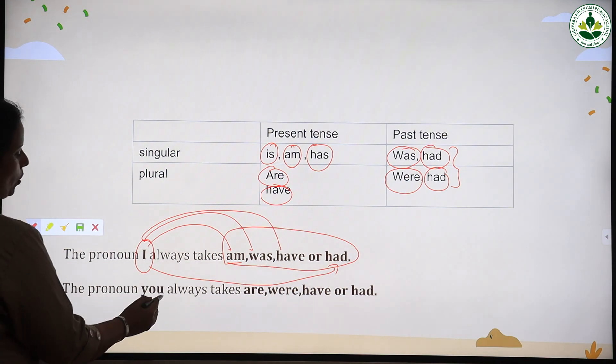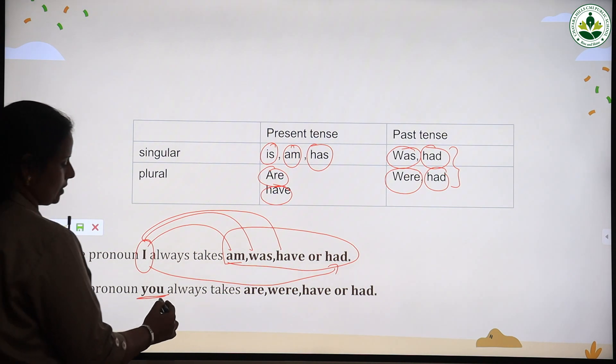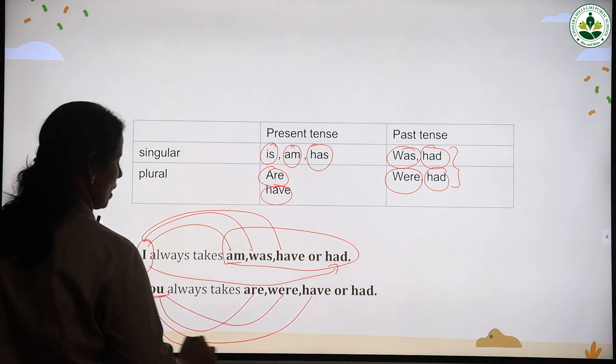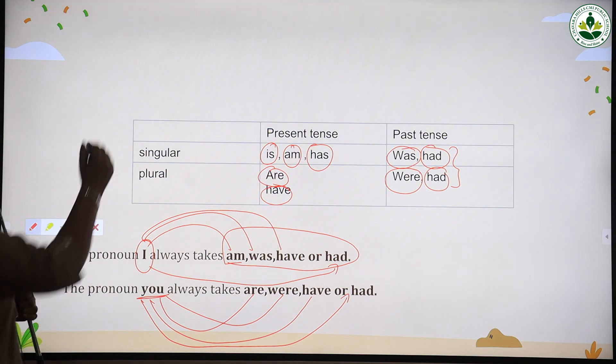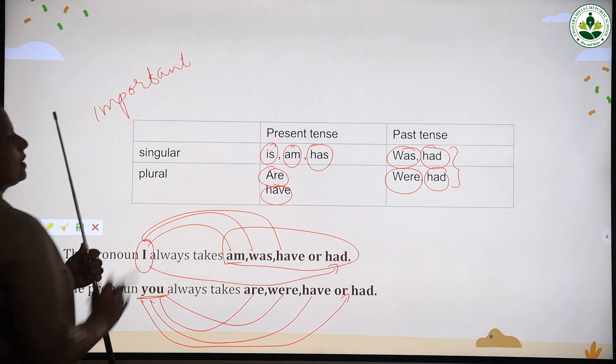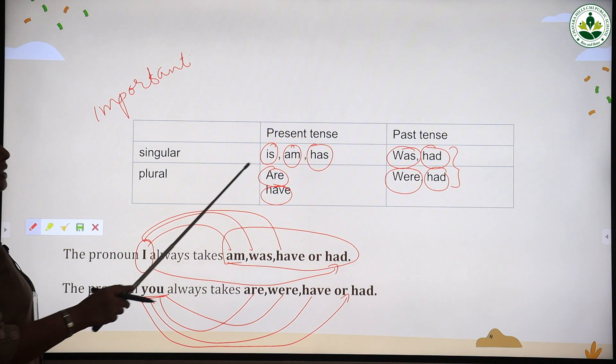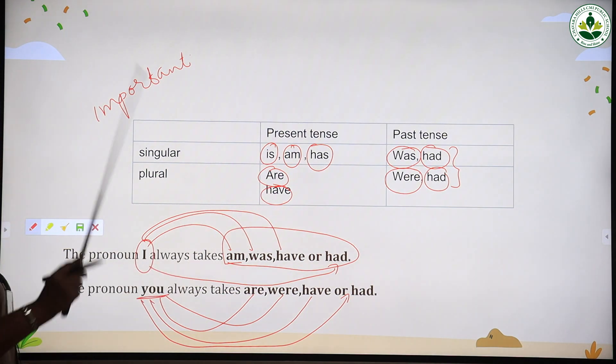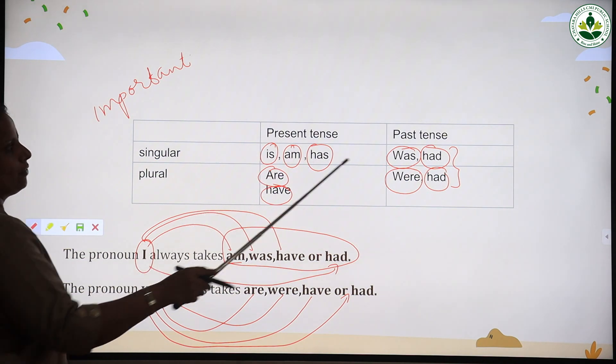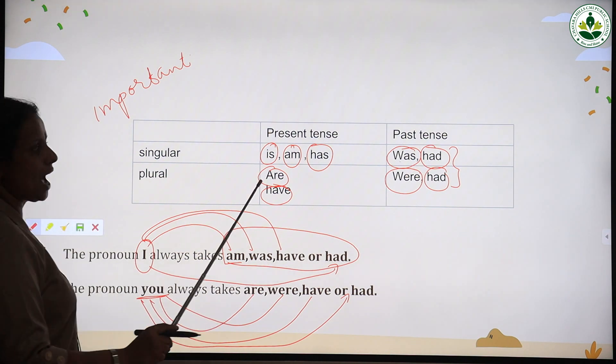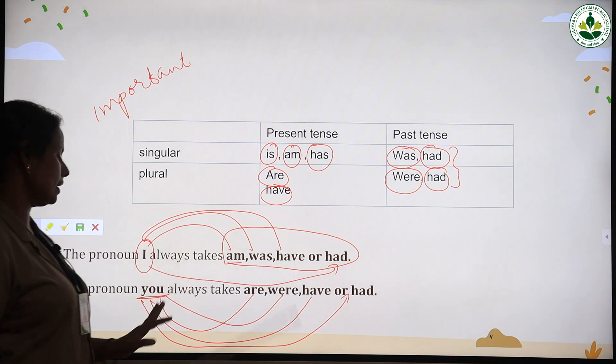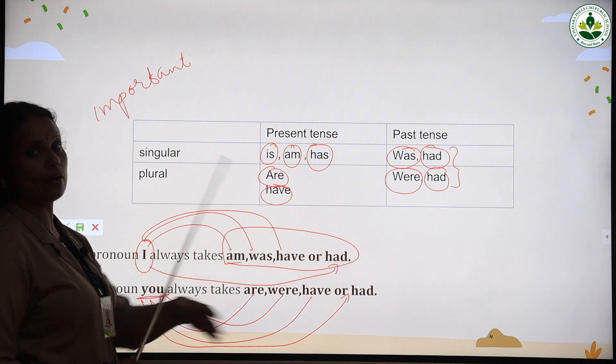Along with the pronoun you, use the words are, you are, you were, you have, you had. This also you have to keep in mind. It is very important. Study along with the singular these verbs and with the plural these verbs. If it is singular in present tense: is, am, has. Past tense: was, had. Plural: are, have. Past tense: were, had. With I use am, was, have or had. With you: are, were, have or had.